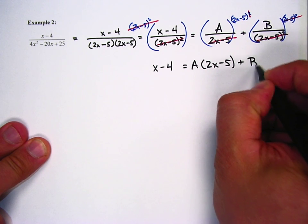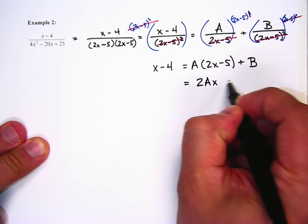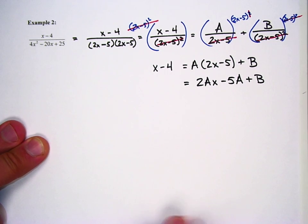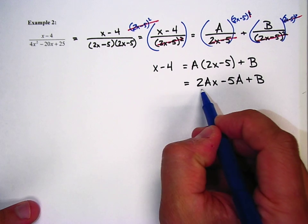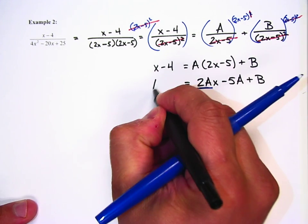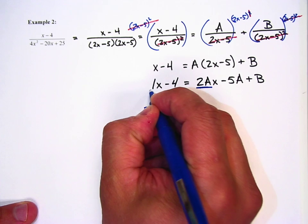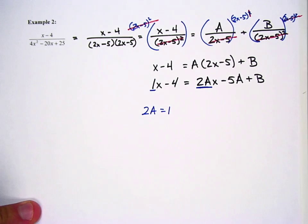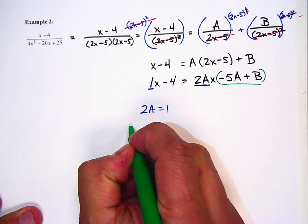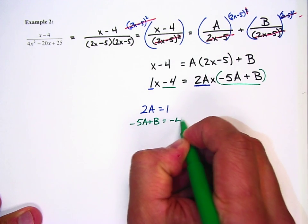So this turns out to be 2ax minus 5a plus b. If I set this up correctly, I have 2a as my coefficient on x and negative 5a plus b as my constant term. Matching with x minus 4: 2a equals 1, and negative 5a plus b equals negative 4.